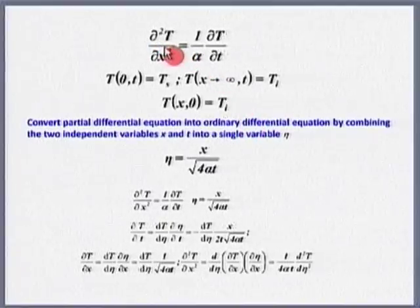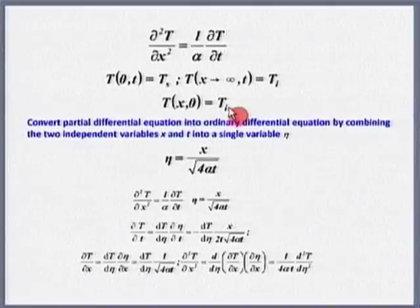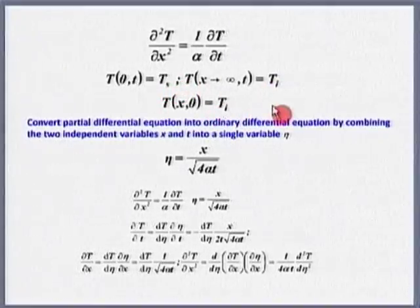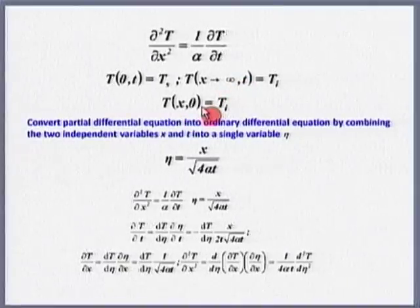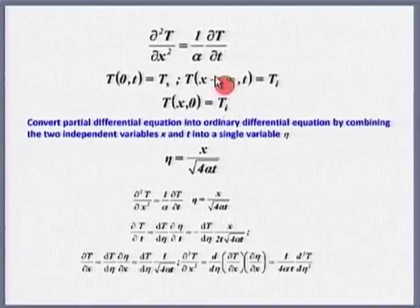This is a second order equation in x and first order in time, so we need two boundary conditions and one initial condition. That is what we have specified here — two boundary conditions and one initial condition. Getting a solution of a partial differential equation is quite difficult.